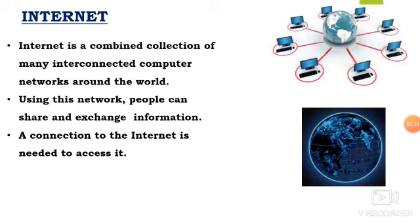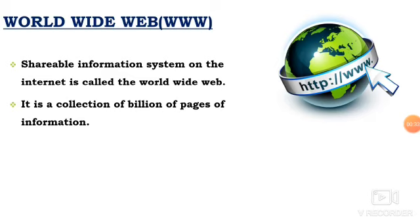Next, we are going to see www — that is World Wide Web. A shareable information system on the Internet is called the World Wide Web. Since all the computers are connected and all the information is shared and exchanged in one particular system, that is called World Wide Web. It is a collection of billions of pages of information.